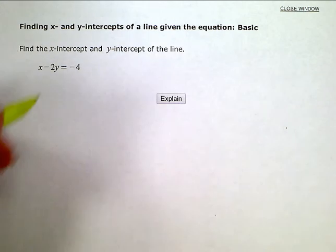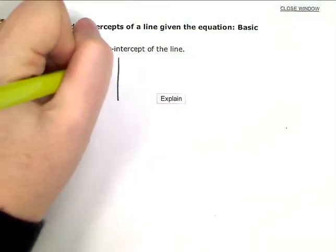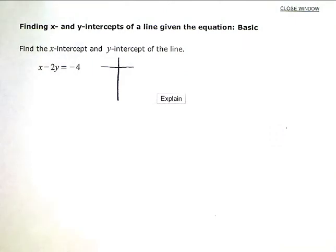So whenever I'm looking for intercepts, I'm looking for where they cross. If I had a graph, the graph crosses the x or the y-axis, respectively.